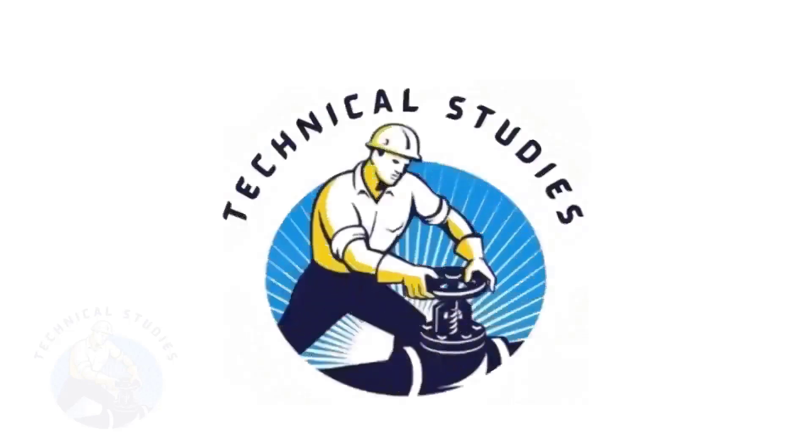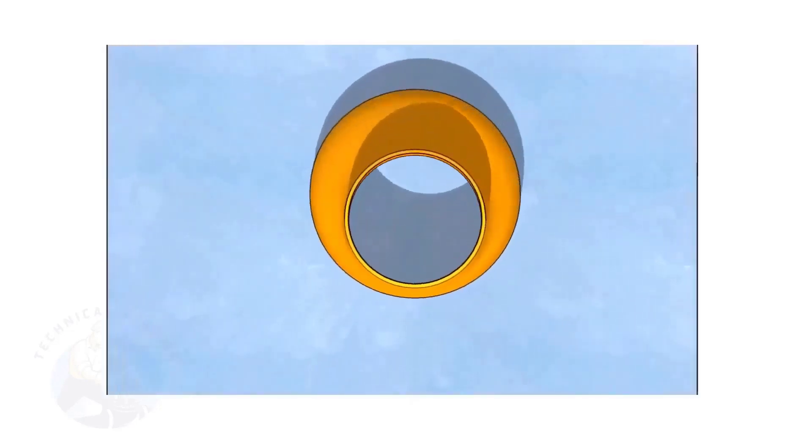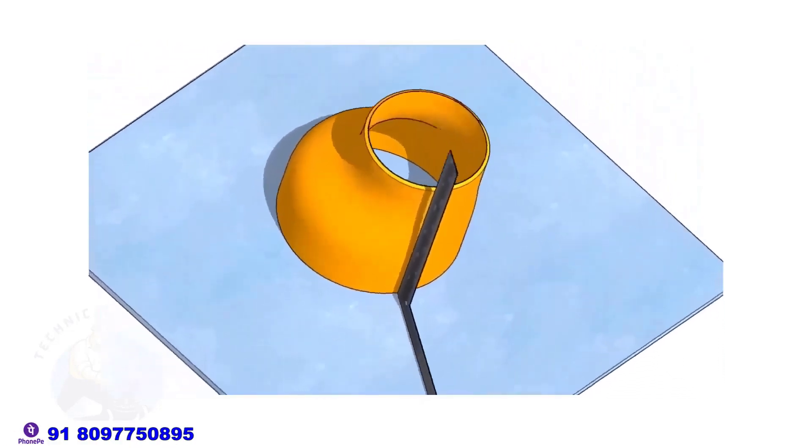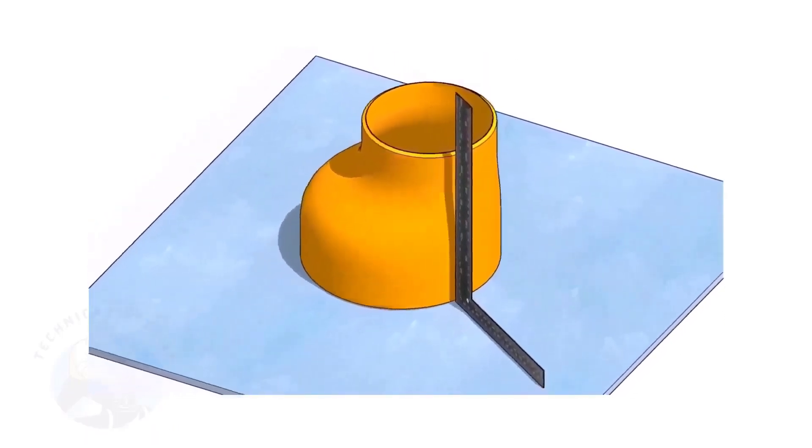Welcome to Technical Studies. Fitting an eccentric reducer to a pipe that is already fitted to another fitting like a flange, tee, elbow etc. is a little tricky.